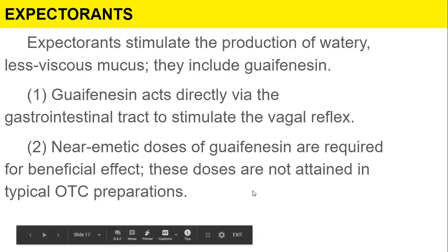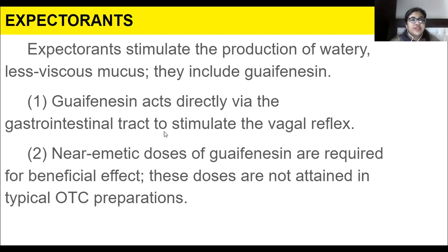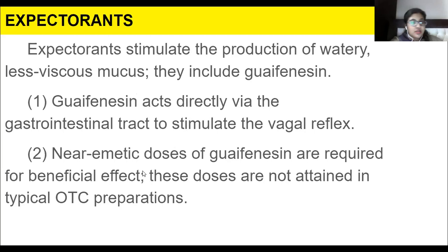Expectorants stimulate production of watery, less viscous mucus. Guaifenesin acts directly via the GI tract to stimulate the vagal reflex. Near-emetic doses of guaifenesin are required for beneficial effect; these doses are not attained in typical over-the-counter preparations.